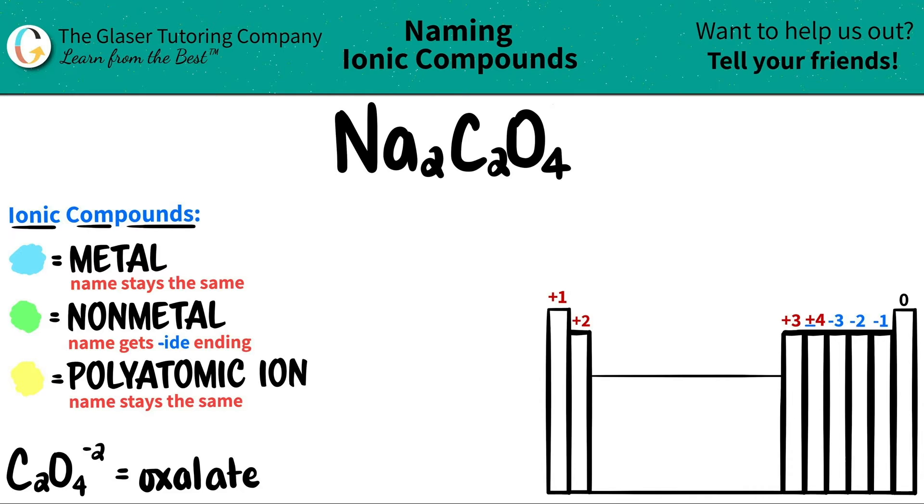In this case, we do have the three elements. We have sodium, carbon, and oxygen. Now the hard part is that polyatomic ions are never on the periodic table. They have to be memorized.